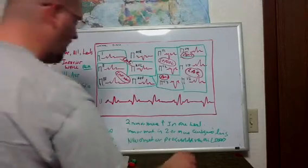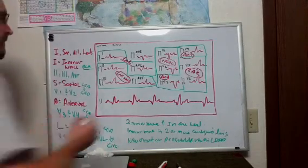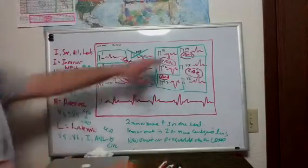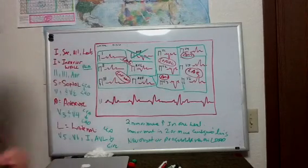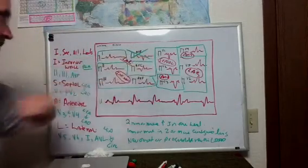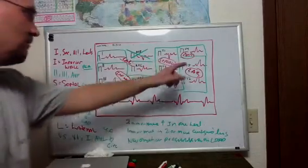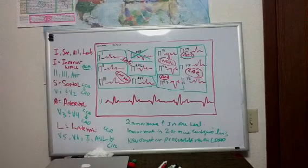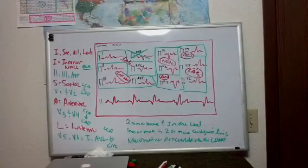AVR, we generally don't use it. It doesn't really look at anything specifically. So as a general rule, we can kind of forget about AVR and just look at those leads. So I see all leads: Inferior 2, 3, AVF; C septal, V1 and V2; all anterior, V3 and V4; leads lateral wall, V5, V6, 1, and AVL. And hopefully you guys find that helpful. Thanks for sticking in there. Take care, everyone.